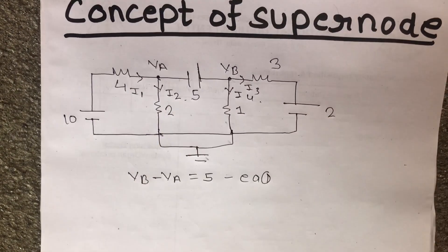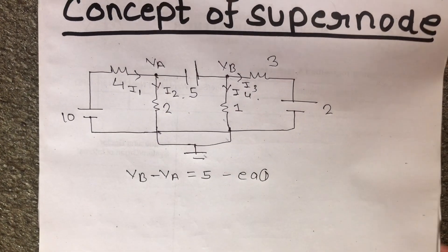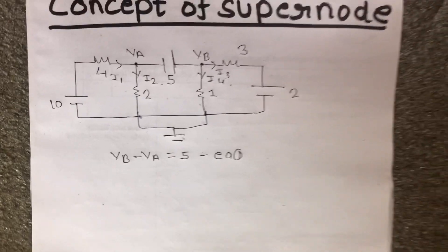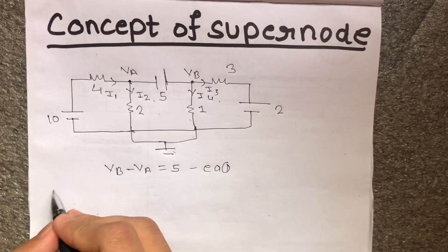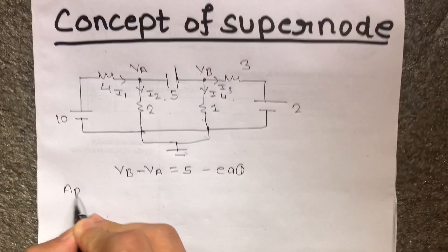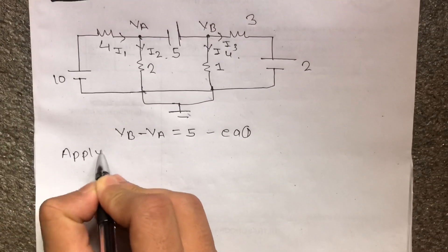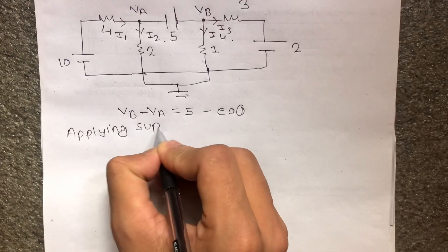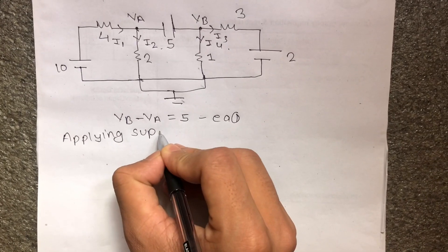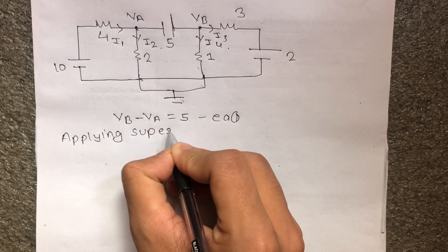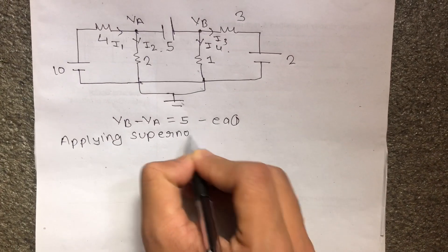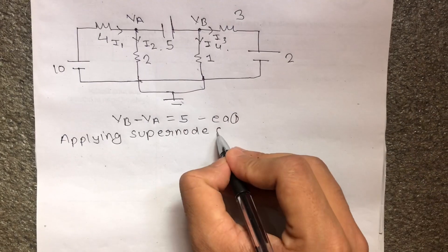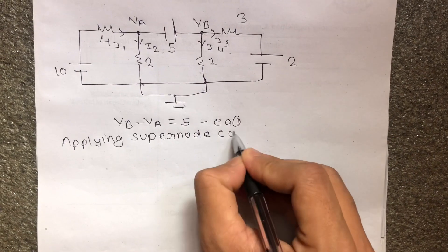The super node condition gives us: VB minus VA equals 5. This is equation 1. We are now applying the super node condition.